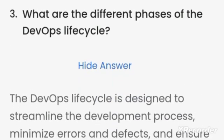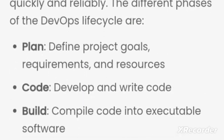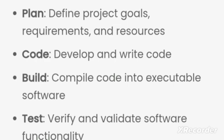Now let's talk about the different phases of the DevOps lifecycle. First we need to plan whatever requirements are there. Then we need to develop — we write an automation script for that. Then we have to build it, then we have to test it, and then we have to release the code to the production environment.